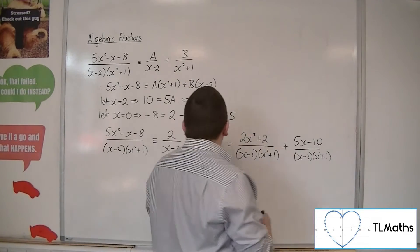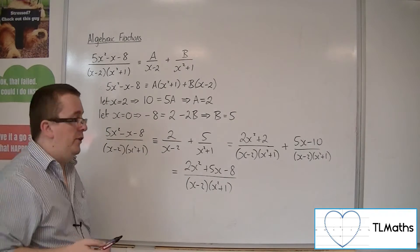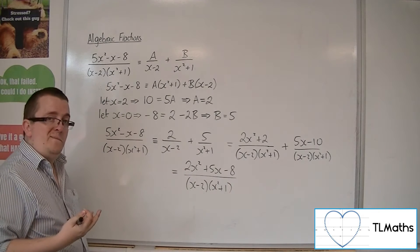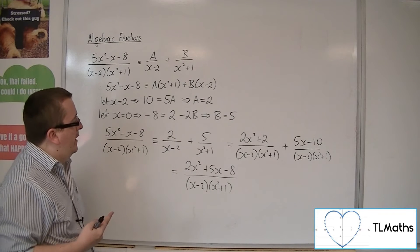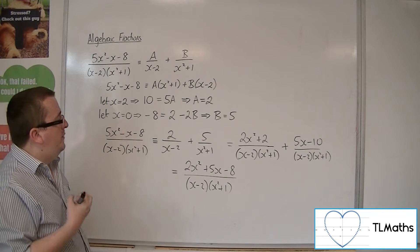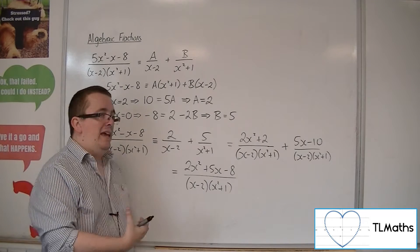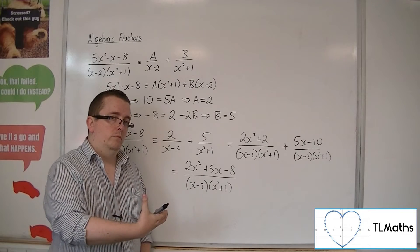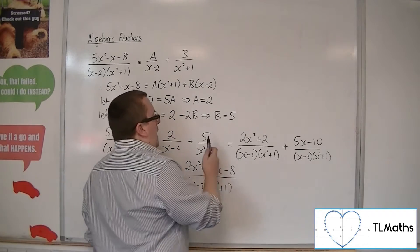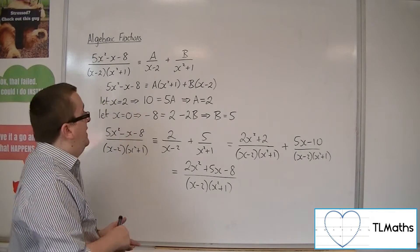Whenever we write these out, in this case for example, we've got this 2 over x minus 2, the numerator is always 1 less power of x than the denominator. However, we don't have that for our 5 over x squared plus 1, because what we must do is we must account for the possibility that in order to keep it a proper fraction, we could still have a linear term in the numerator and the quadratic term in the denominator.